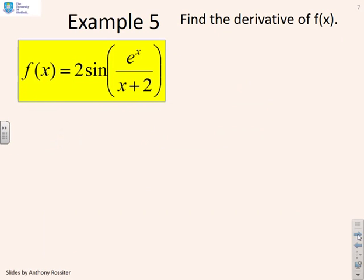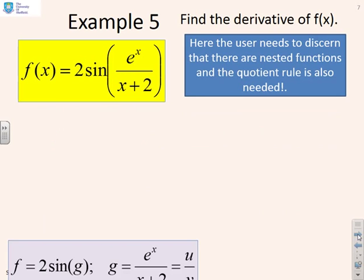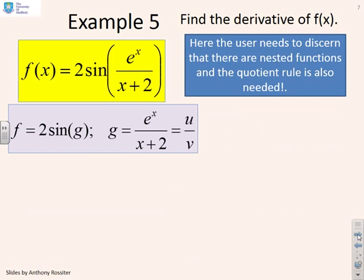Example 5. Find the derivative of f of x, where it's 2 sin e to the x over x plus 2. So again, I need to discern that there are nested functions, and also here I'm going to need the quotient rule. What I'm going to do is say here I've got 2 sin g, where g is e to the x over x plus 2, which clearly is a quotient. It's of the form u over v.